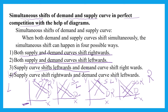For two marks, they may ask you to mention any two possibilities of simultaneous shift in demand and supply. You can choose the first two points to write for two marks and easily get two marks.